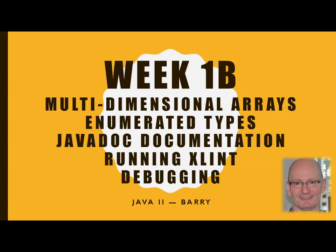Hi class, it's Bill Berry back with another video in our Week 1 of Java 2 series. We talked in the last video about multidimensional arrays, specifically two-dimensional arrays, and now we're going to talk a little bit about enumerated types and what they can do for us. These are super useful. If you're looking in the Building Java Programs book, they're going to be in an appendix, so you'll have to look back in the back of the book to find them, but it is interesting reading. So let's jump into our enumerated types.